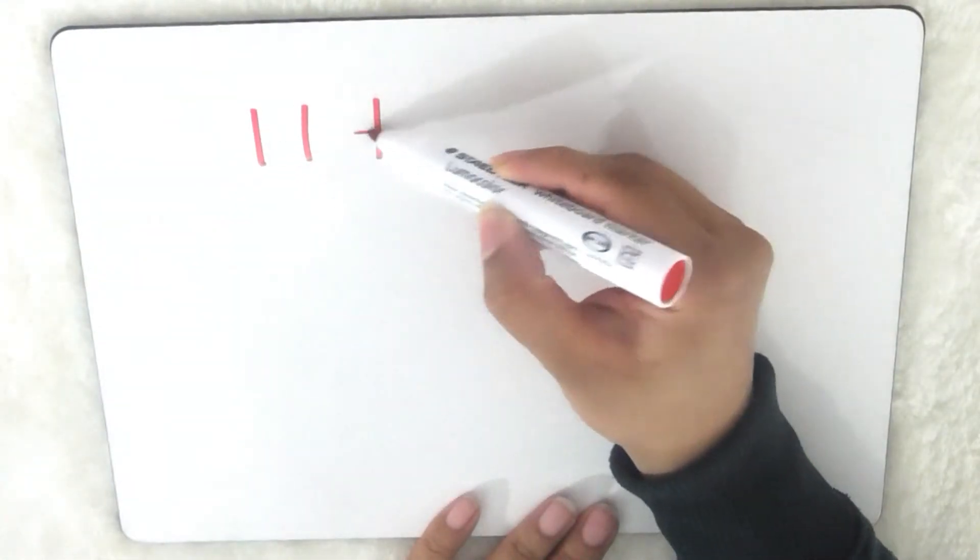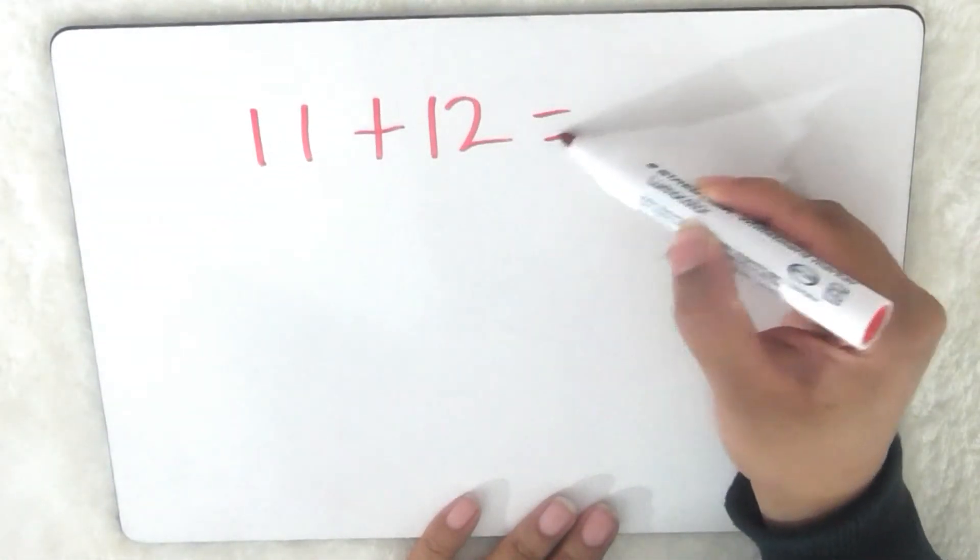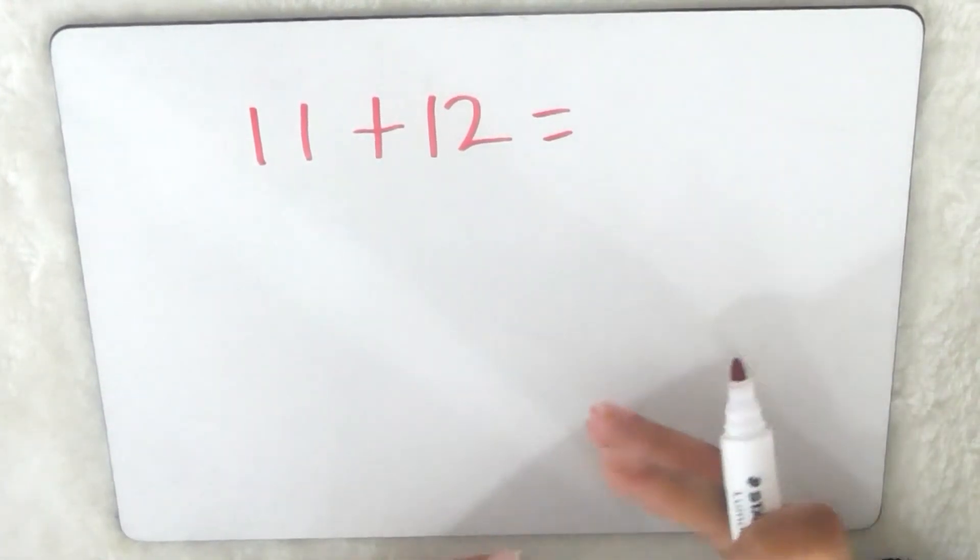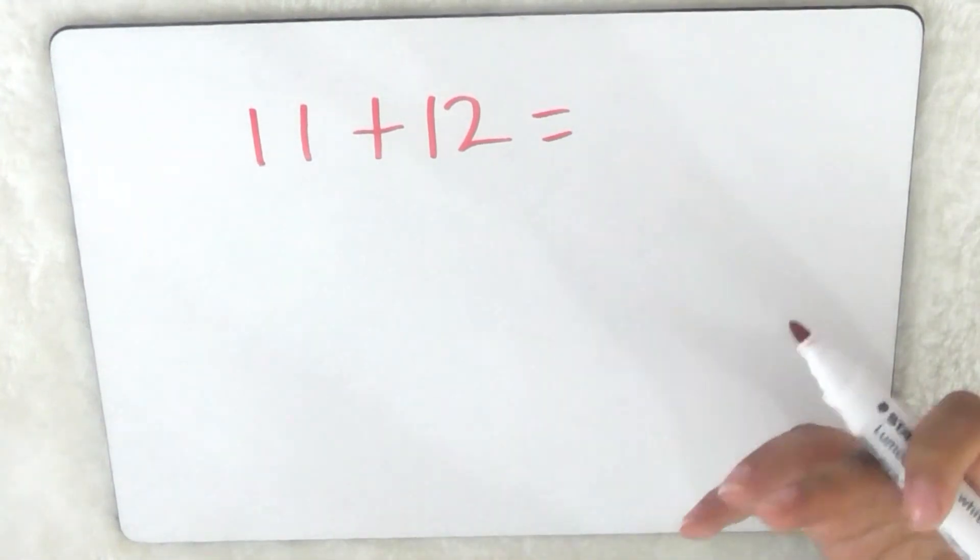Sometimes you might see a number sentence that looks like this, 11 plus 12, and then you think, oh I don't have a number line, I don't have that many fingers, how do I work it out? So here is another way that you could do that.